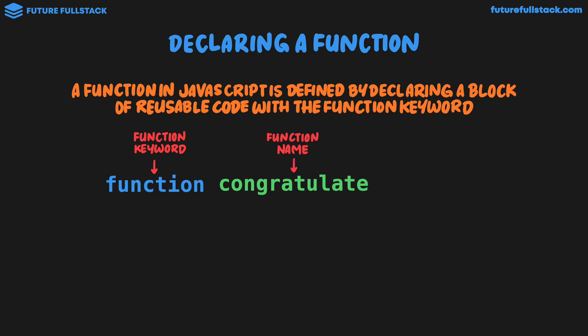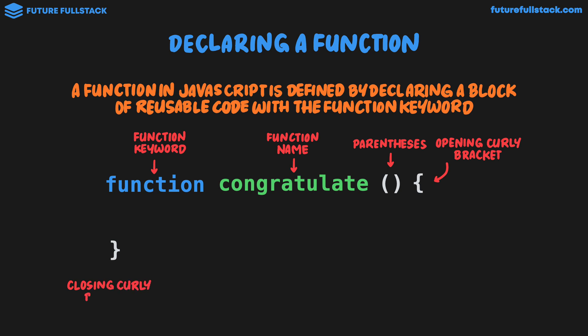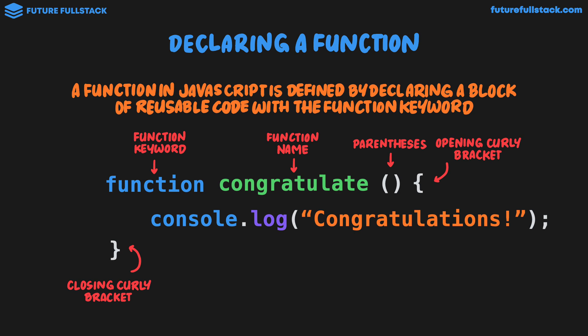We then give our function a name. In this case, I've called my function 'congratulate'. You can call your functions whatever you like, but usually it's descriptive of what the function is doing. Our function name is then followed by a set of parentheses, and then we grab curly brackets to define the function body — that is the block of code we want to be reusable. We have an opening curly bracket and a closing curly bracket, and inside these curly brackets we have the code we want to execute. This makes up our function body — the code inside the function. This entire unit is called a function declaration.